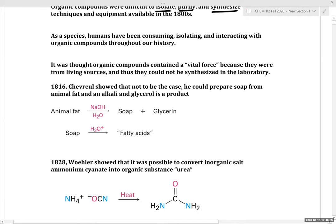One of the really keystone experiments was in 1816 by Chevreul, where he showed that you can prepare soap from animal fat and alkali with glycerol as a product. This is a classic saponification reaction, and it was revolutionary because it showcased that you can systematically synthesize products often associated with natural sources.